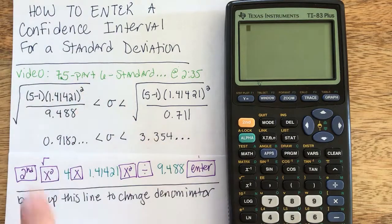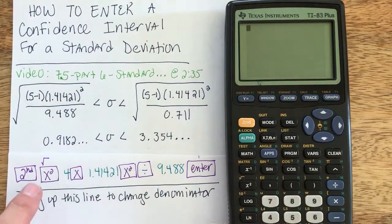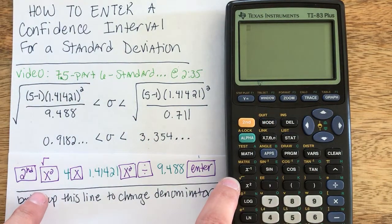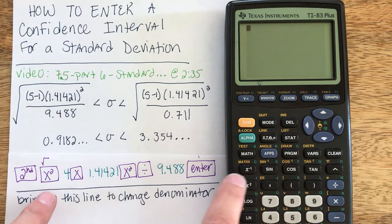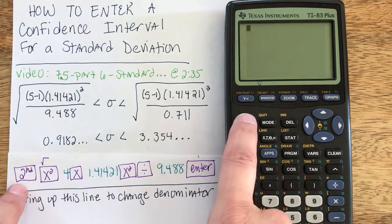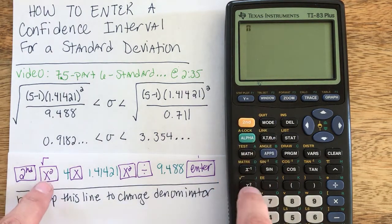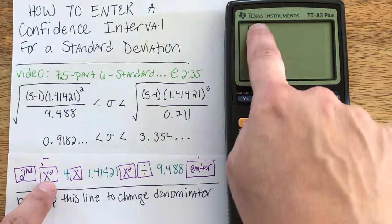So first thing I need to do is take a square root. I've turned my calculator on, but my square root button is technically the yellow display above x squared. So I first hit the yellow second and then x squared to get the square root symbol.